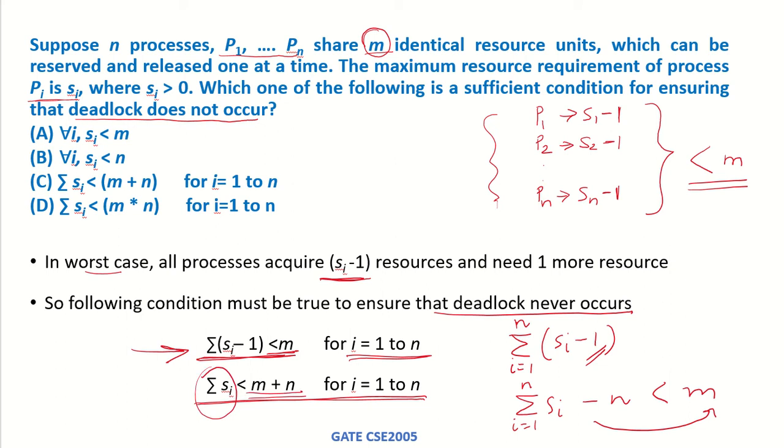So this is the necessary condition. The answer, option C, is the necessary condition which is to be ensured for deadlock to not occur.